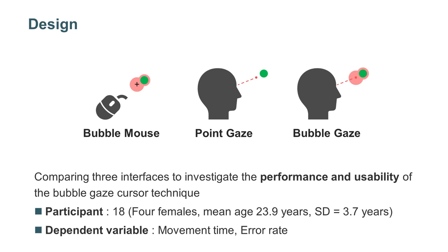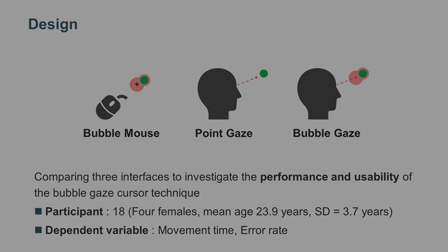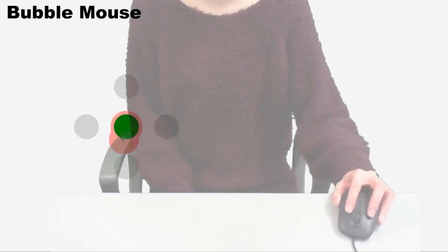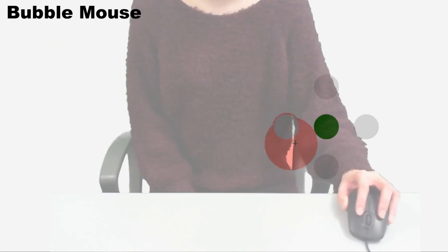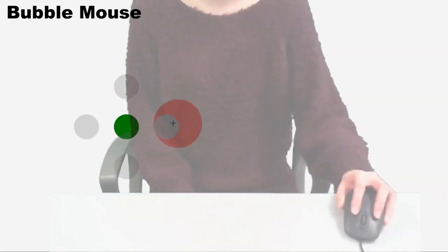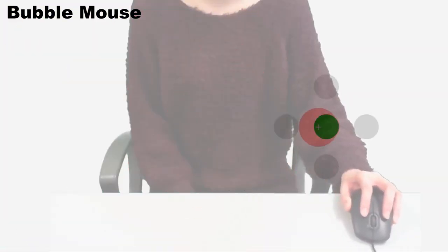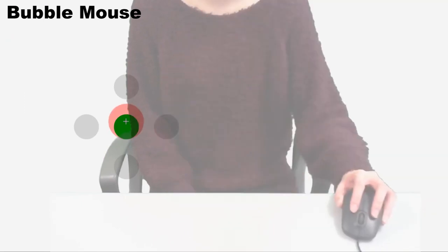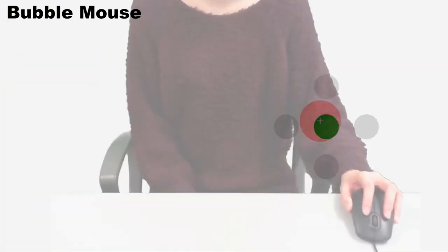Dependent variables are movement time and error rate. Bubble mouse is the original bubble cursor technique; unlike the other methods, the object is selected with the mouse, not with the eye gaze.